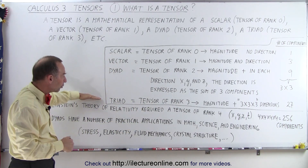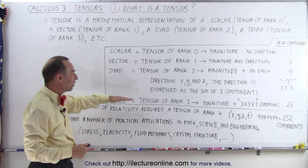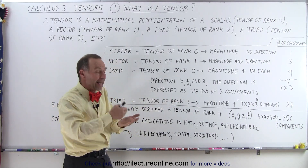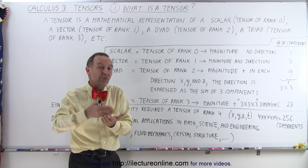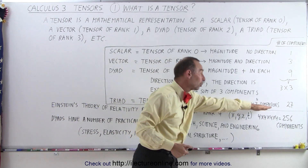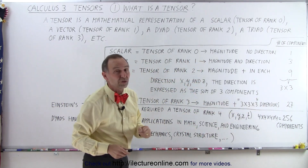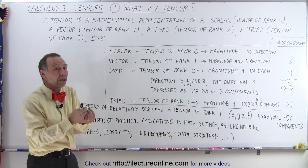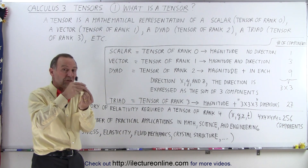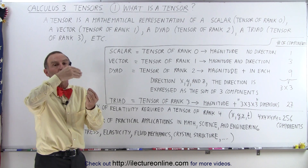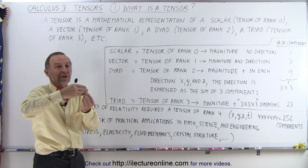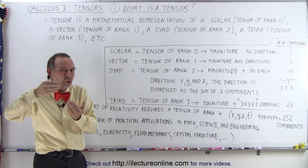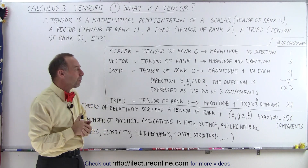Then we go on to a triad. A triad is a tensor of rank 3, which means it has 3 times 3 times 3 dimensions — in other words, 27 components. Those are less commonly used. But for each of the three components in the x direction, we may need to describe what happens there in terms of a vector with three components as well. You can see how it quickly multiplies.